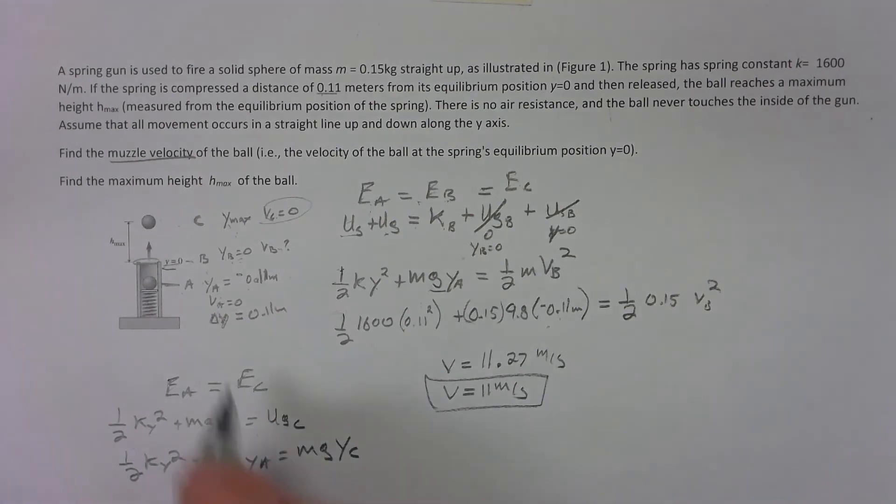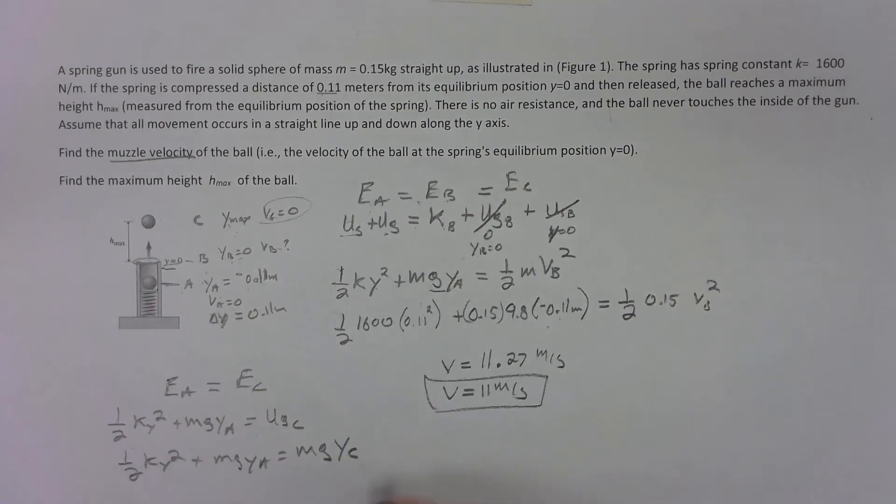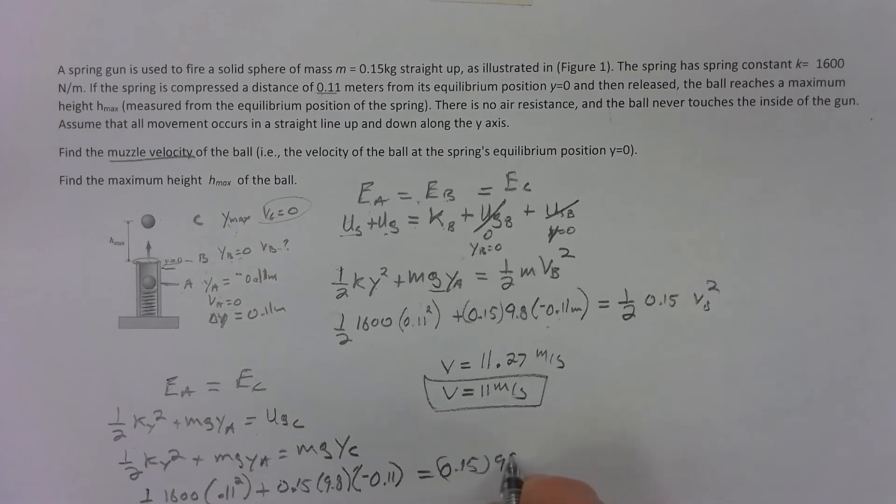Above the muzzle, because our zero point was there. Plug in our numbers and calculate it out again. One half times 1600 times 0.11 squared plus 0.15 times 9.8 times negative 0.11 as our height is going to equal 0.15 times 9.8 times y at c, which is our y_max.